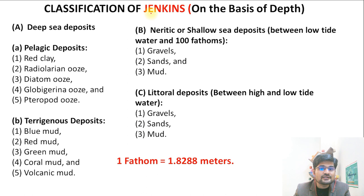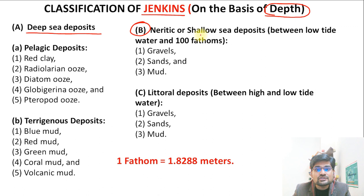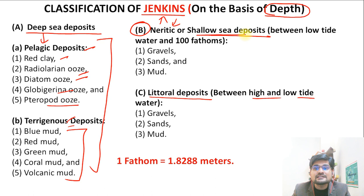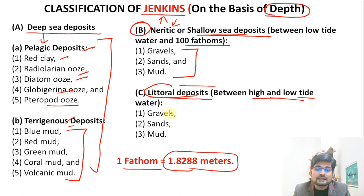Jenkins classified on the basis of depth into three types: deep sea deposits, shallow sea (neritic) deposits, and littoral deposits between high and low tide water. Deep sea deposits include pelagic types — red clay, radiolaria, diatom, globigerina, pteropod — and terrigenous muds. Neritic or shallow sea deposits up to a hundred fathoms include gravel, sand, and mud. Note that one fathom is just under two meters. Littoral deposits between high and low tide also include gravel, sand, and mud.